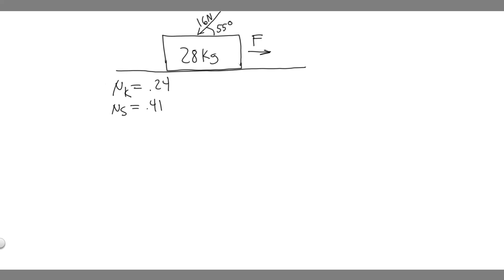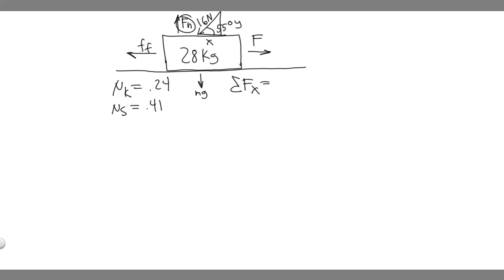So let's talk about how we're going to solve this problem. We're trying to find the force F needed to make this box move, and the way we find F is by taking the sum of the forces in the x direction. So label the forces acting on the box: we have friction acting one way, and the force up top has both x and y components since it's at an angle. We also have mg going straight down due to gravity, and a normal force going up. We need F to be at least greater than the opposing forces in the x direction.